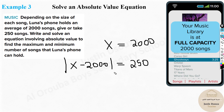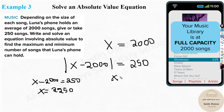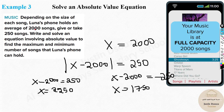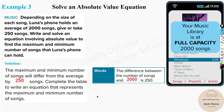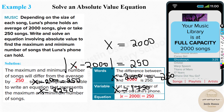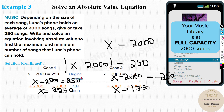Solving: Case 1: X minus 2000 equals 250, so X equals 2000 plus 250, which is 2250. Case 2: X minus 2000 equals negative 250, so X equals 2000 minus 250, which is 1750. The answers are 1750 and 2250. You can also think of it as adding 250 to 2000 for the maximum and subtracting 250 from 2000 for the minimum. Always write the equation first, then solve both cases.